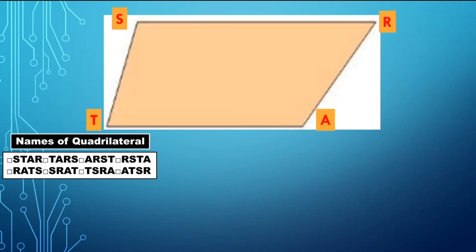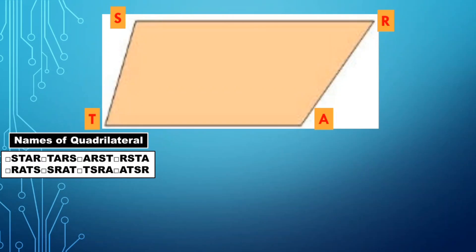That is in counterclockwise direction. In clockwise direction, starting from vertex R, we have quadrilateral RATS, quadrilateral SRAT, quadrilateral TSRA, and quadrilateral ATSR. Take note: you cannot name a quadrilateral as S-A-R-T. You are not allowed to jumble those vertices to name the quadrilateral.